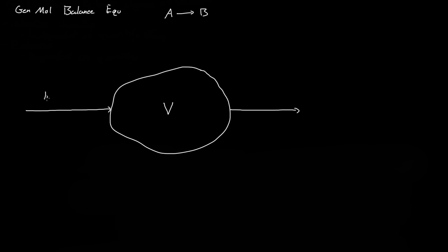Let's assume we have one mole of A going into the system per minute. So the feed rate, or the molar flow rate of A, is equal to one mole per minute — we put a naught subscript to indicate this is the feed coming into the system initially. Now A is also leaving the system, so we have some flow rate FA, which indicates the moles of A leaving per time. Let's say we have 0.5 moles of A leaving per minute.